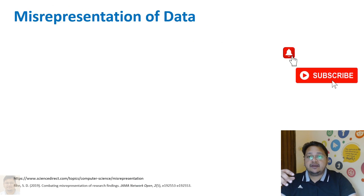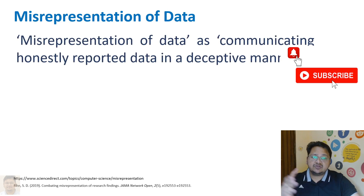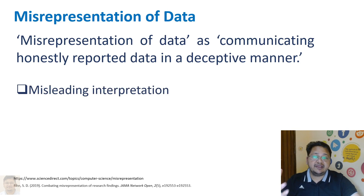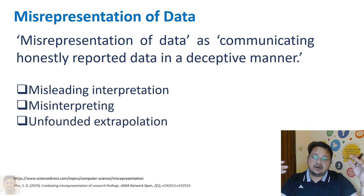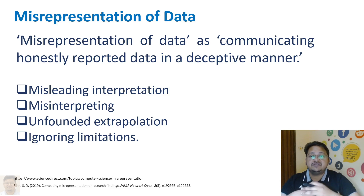Now the other part is misrepresentation of data. When we talk about misrepresentation of data, we can say it involves communicating honestly reported data in a deceptive manner — in other words, misleading interpretation. You can also have misinterpretation of data, unfounded extrapolation in cases involving a set or population, and ignoring different limitations, all of which can lead to misrepresentation of data.